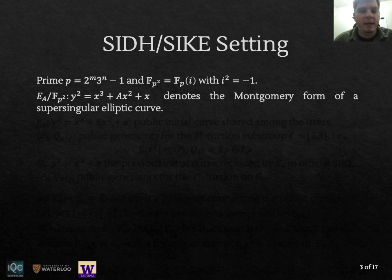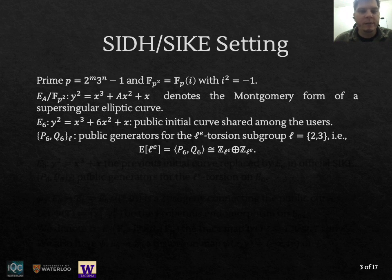Here, E_A denotes the curve in its Montgomery form, and A is just the Montgomery coefficient. In the second round of this competition, the SIKE team also suggested to use the curve E6 as the public initial curve shared among all the users, and they also defined two pairs of torsion generators, denoted here P6 and Q6, where if ℓ is equal to 2, they are going to generate the 2^n torsion, and if ℓ is equal to 3, they are going to generate the 3^n torsion of the curve E6.